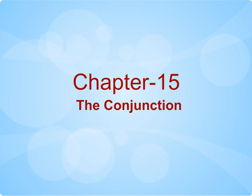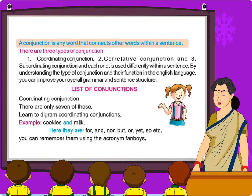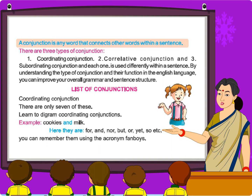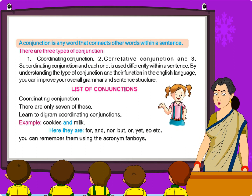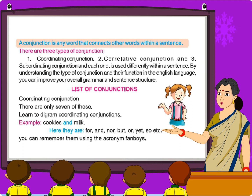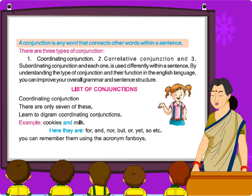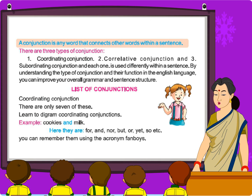Chapter fifteen: the conjunction. A conjunction is any word that connects other words within a sentence. There are three types of conjunction: coordinating conjunction, correlative conjunction, and subordinating conjunction. Each one is used differently within a sentence. By understanding the type of conjunction and their function in the English language, you can improve your overall grammar and sentence structure.